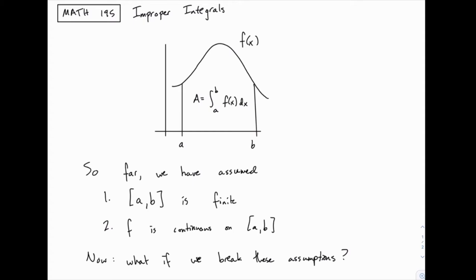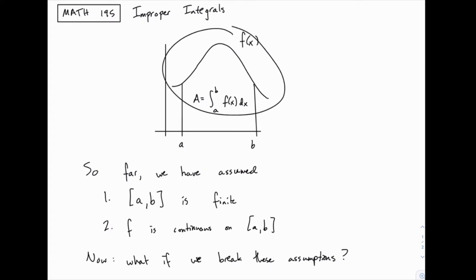First of all, we assumed that this interval from a to b is a finite interval. That seems like a pretty reasonable assumption when we're looking for an area under a curve — we define a starting and ending point such that we have a finite interval from a to b. We also assumed that this function is continuous. If it's not continuous, if there are breaks in the curve, then evaluating the antiderivative poses a problem, because for a function to have a derivative it needs to be continuous, and in reverse, taking an antiderivative, we've also assumed continuity.